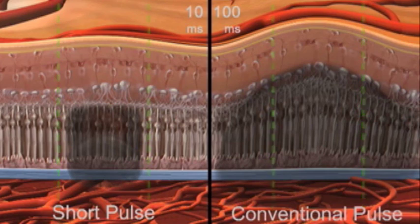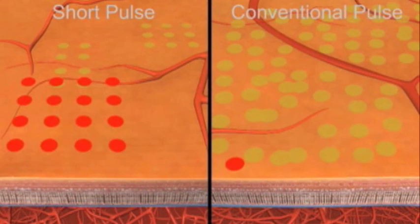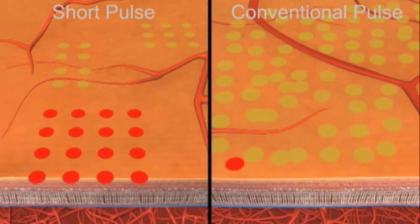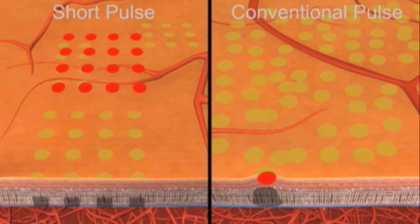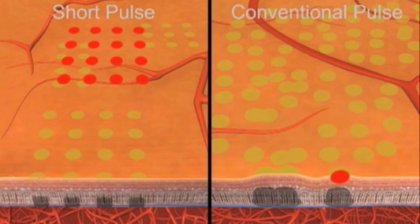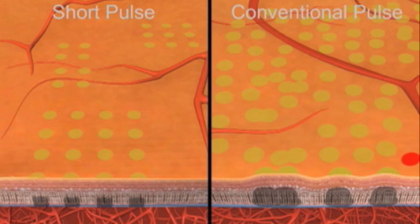In addition, PASCAL's uniform pulses and semi-automated pattern delivery prevent further collateral damage that can result from uneven power and irregular spacing of traditional laser pulses.